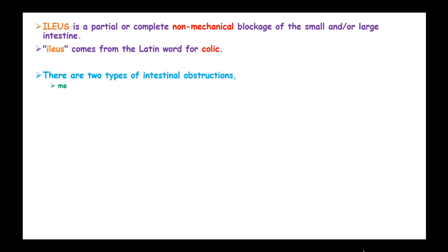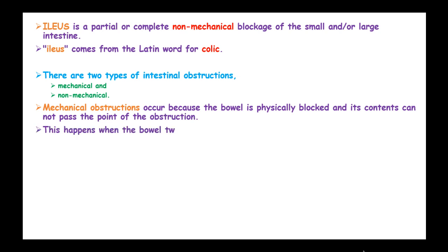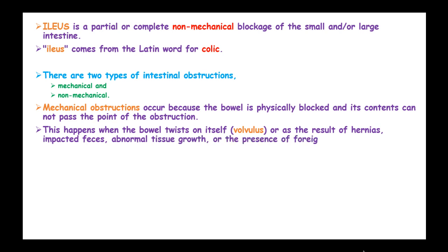There are two types of intestinal obstruction: mechanical intestinal obstruction and non-mechanical obstruction. In mechanical obstructions, the bowel is physically blocked and its contents cannot pass at the point of the obstruction. This happens when the bowel twists by itself, through volvulus, adhesions or hernias, impacted feces, abnormal tissue growth, or the presence of foreign bodies in the intestines.